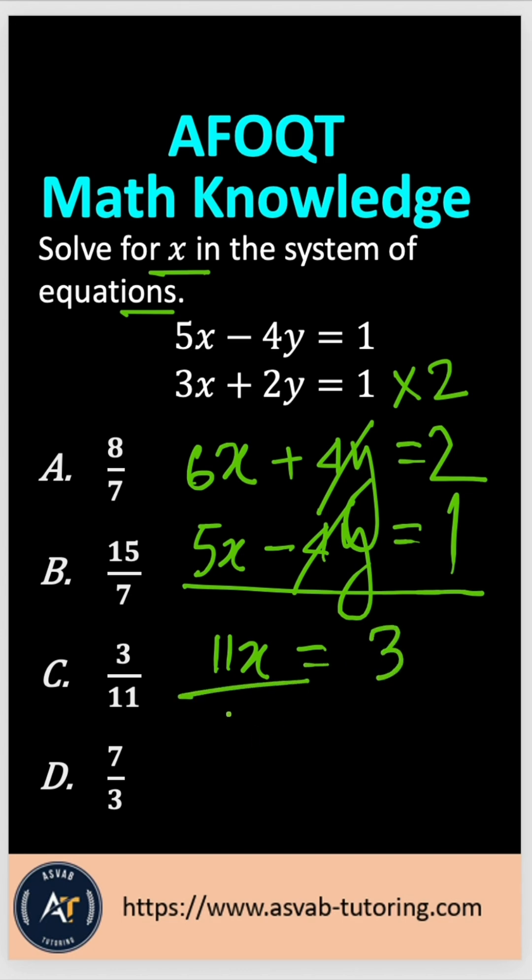Now divide both sides by 11. So now 11, 11 cancel out. That gives you x equal to 3 over 11.